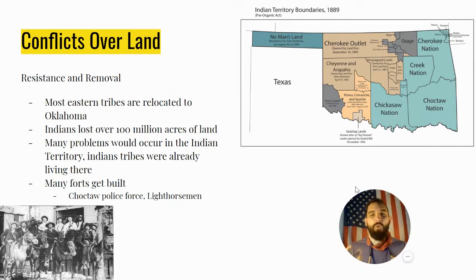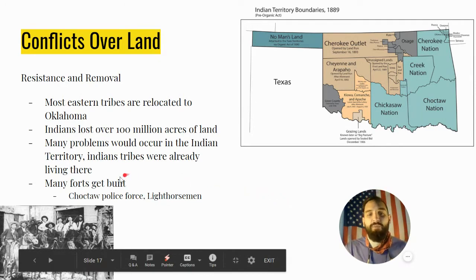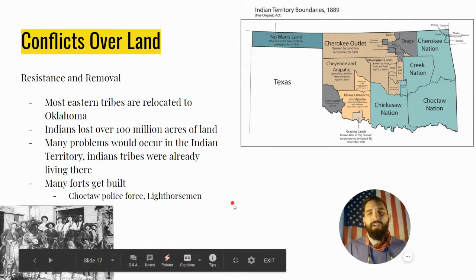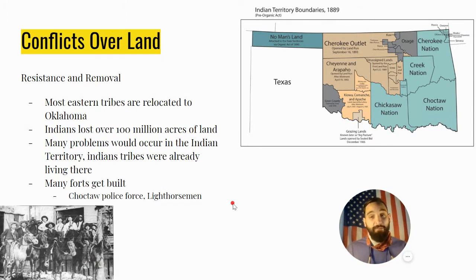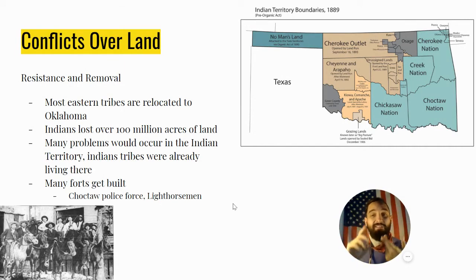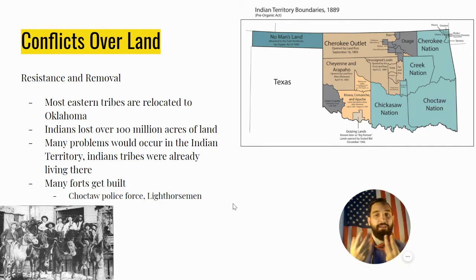The U.S. Army built forts — many named after Indian tribes, like Fort Kiowa and Fort Comanche. You start seeing the rise of Indians working for the government, such as a Choctaw police force known as the Light Horsemen. The five civilized tribes lost over 100 million acres of land and were put into the Indian Territory of about 60 million acres altogether. During the Jackson Age, Indians had it bad. The Cherokees were removed from where they lived all the way to Oklahoma — a wasteland where the farming, hunting, and fishing were not good. Many couldn't adapt.